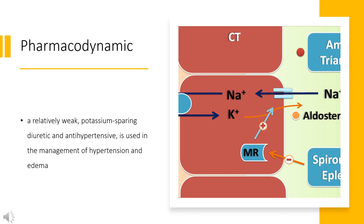As triamterine tends to conserve potassium more strongly than promoting Na+ excretion, it can cause an increase in serum potassium, which may result in hyperkalemia potentially associated with cardiac irregularities. In healthy volunteers administered with oral triamterine, there was an increase in the excretion of sodium and magnesium and a decrease in the clearance of uric acid and creatinine due to its effect of reducing glomerular filtration and renal plasma flow. Triamterine does not affect calcium excretion. In clinical trials, the use of triamterine in combination with hydrochlorothiazide resulted in enhanced pressure-lowering effects of hydrochlorothiazide.